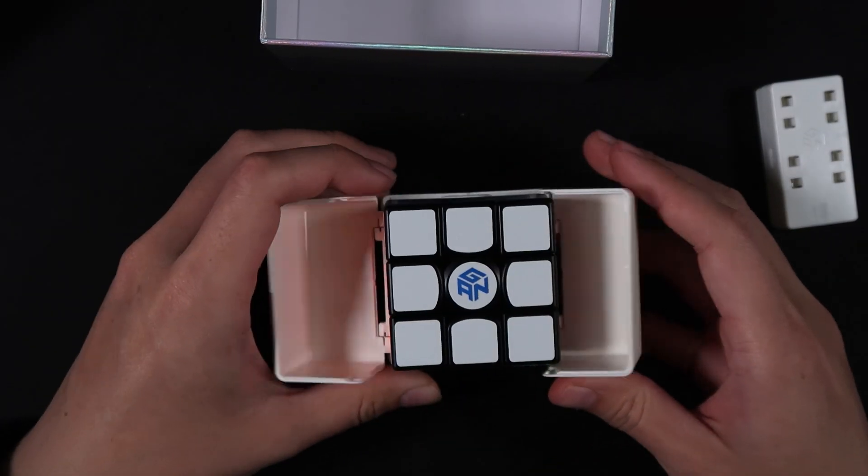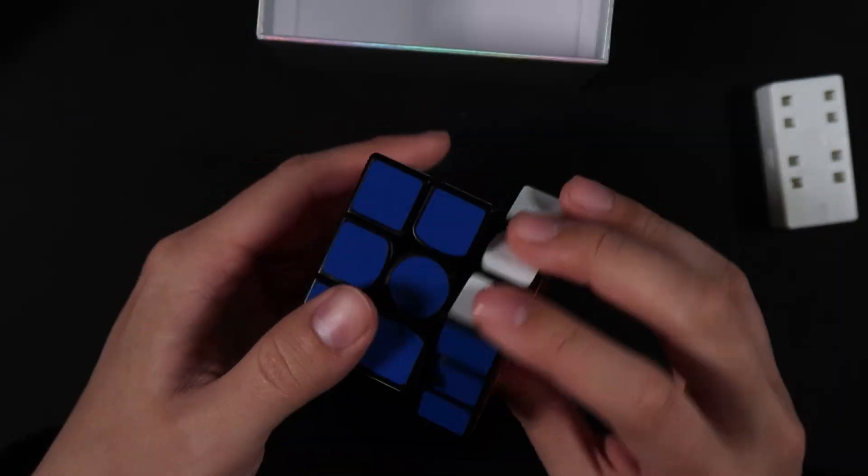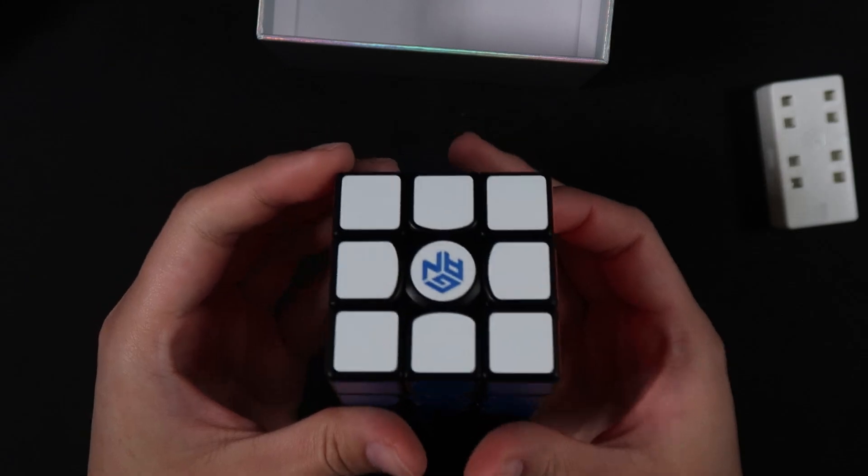Out of the box the cube felt very light and papery and the turning was quite fast, so for the setup I wanted to try and stay true to that. I toned down the speed a little bit but tried to retain that papery feel.